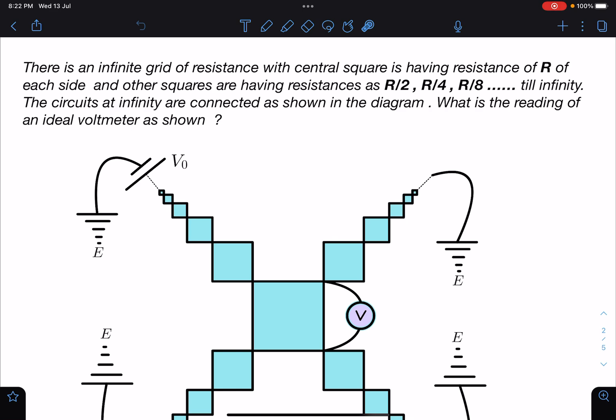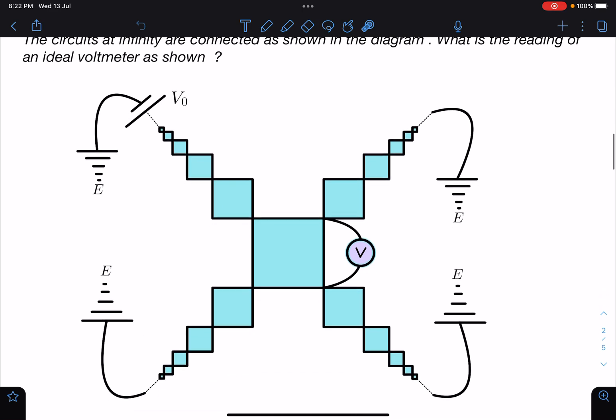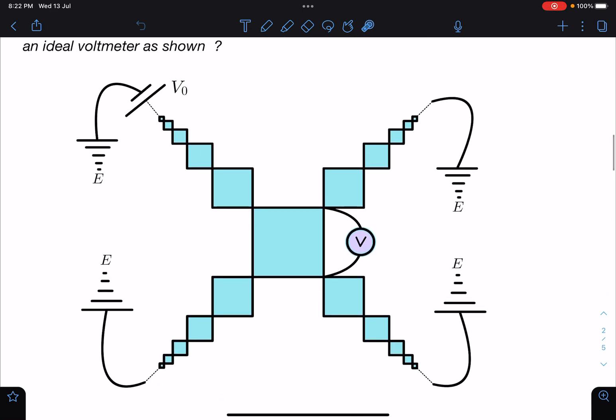The circuits at infinity are connected as shown in the diagram. What is the reading of an ideal voltmeter as shown? You can see how these values are beautifully set. This is extended till infinity here, infinity here, infinity here, and here till infinity. Only this part is connected to a battery and remaining are connected with the earth.